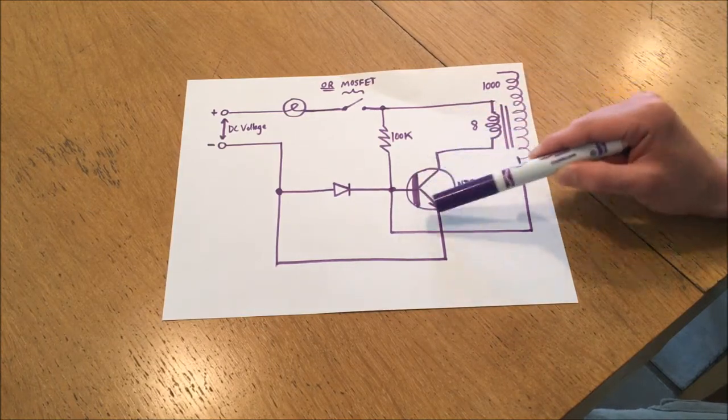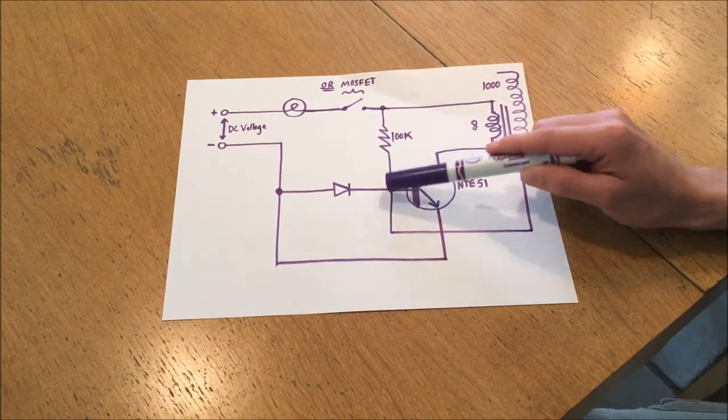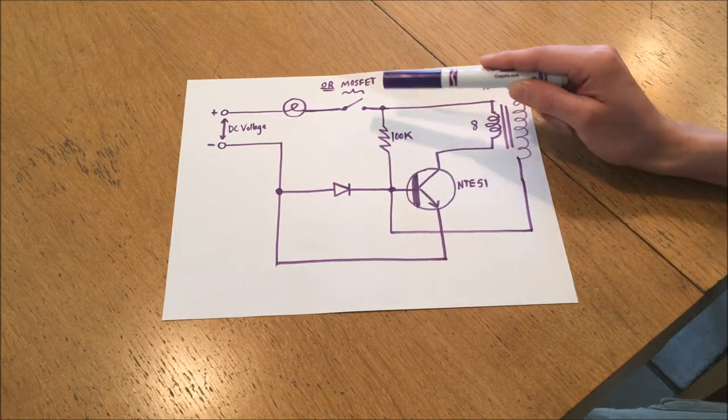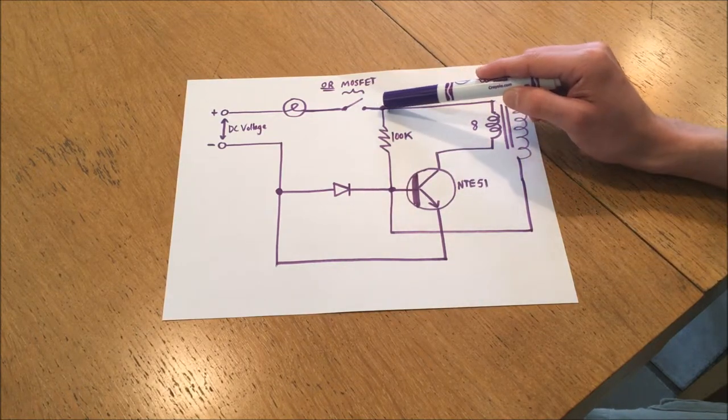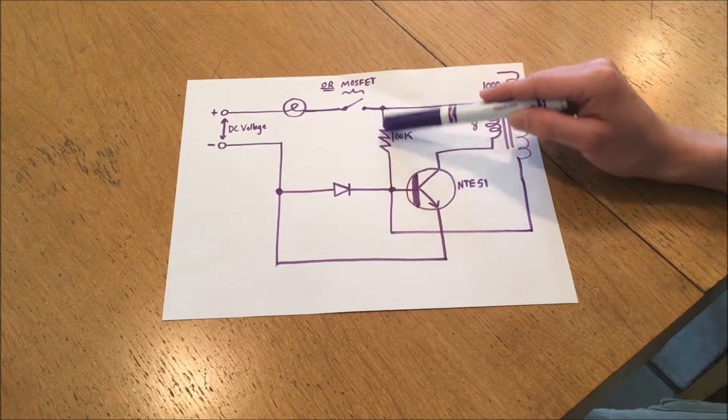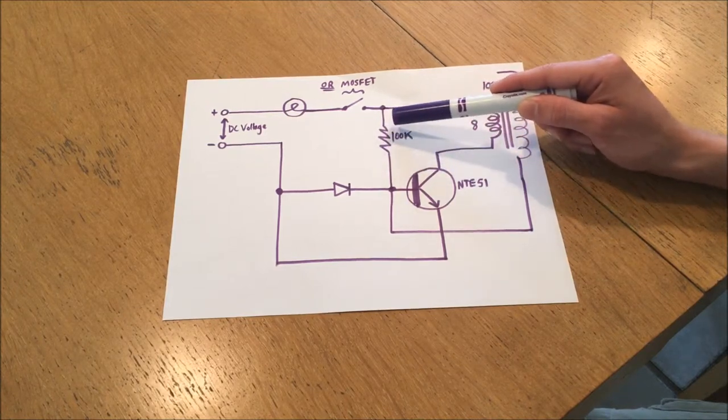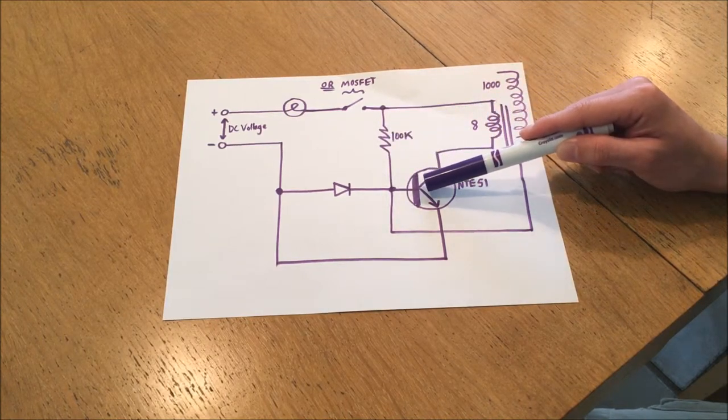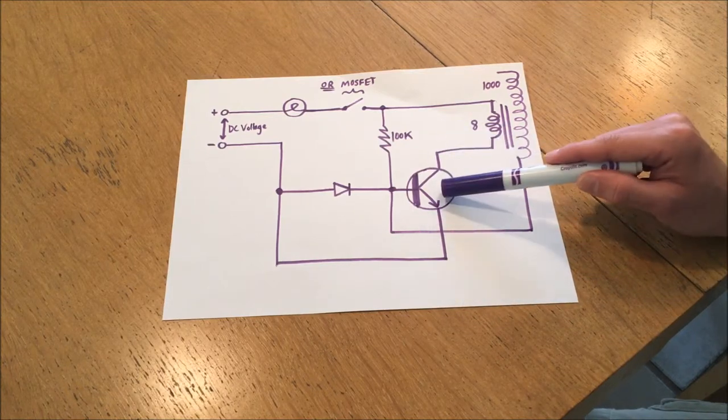Initially, this transistor is in the open state. But as soon as the power is turned on, voltage and current will flow through this 100k resistor, the current will flow into the base, into the collector, and will switch the transistor on.